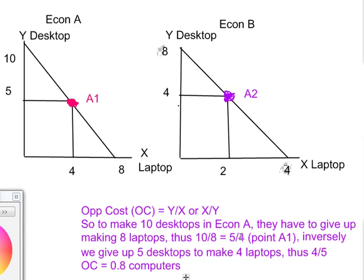Since I'm giving up eight laptops to make ten computers, that's eight over ten. I'm giving up eight-tenths of a laptop. Or in this case, to make eight desktops I'm giving up four laptops, so four divided by eight. That's going to be half a laptop to produce one extra desktop.